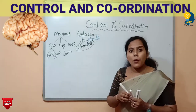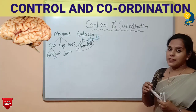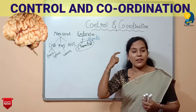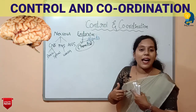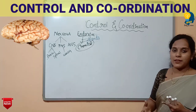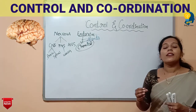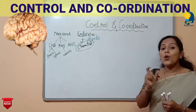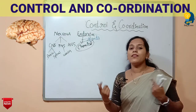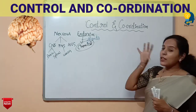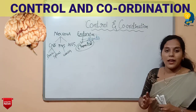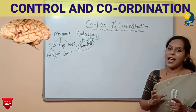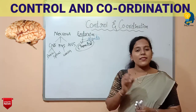I will tell you in detail about the glands as we move ahead. Some glands you may already know — the thyroid gland, the pituitary gland, and the exocrine glands. There are many varieties of glands present inside our body. These glands release chemicals that control and coordinate various systems inside our body. The endocrine system is completely based on the chemicals released by these glands.